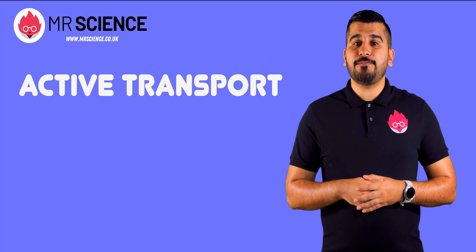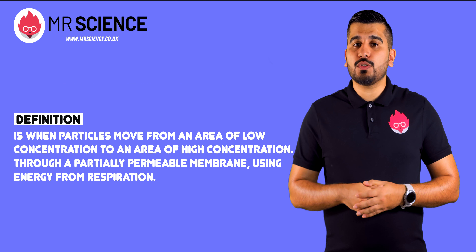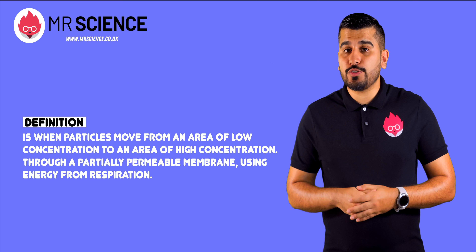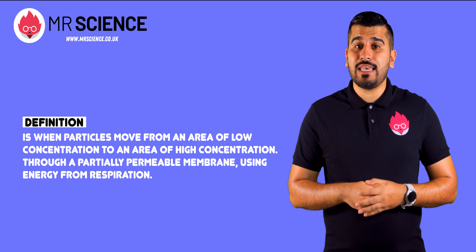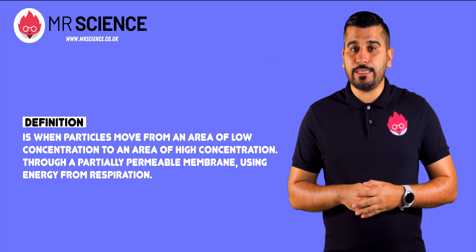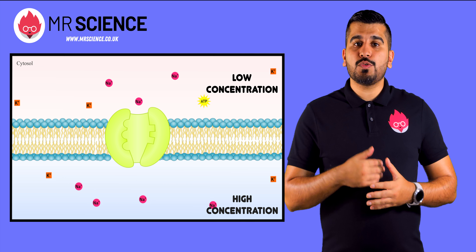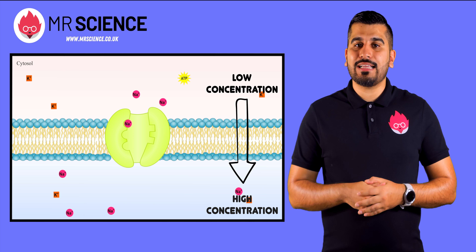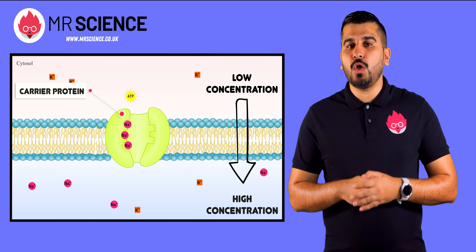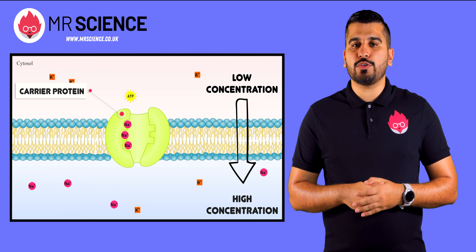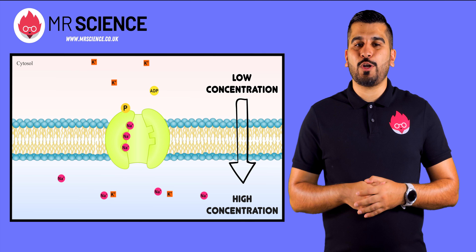Our third and final type of movement is active transport, which is the movement of particles from an area of low concentration to an area of high concentration through a partially permeable membrane. Particles here move against the concentration gradient, so they need energy from respiration. This diagram shows one mechanism for how active transport works. Carrier proteins in the cell membrane move substances from a low concentration to a high concentration, using ATP to change shape and move substances against the concentration gradient.